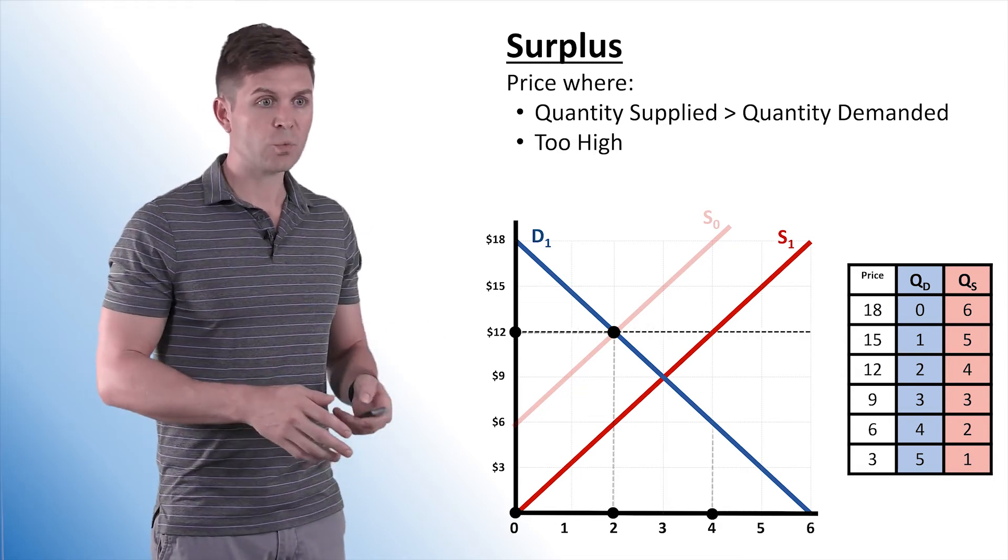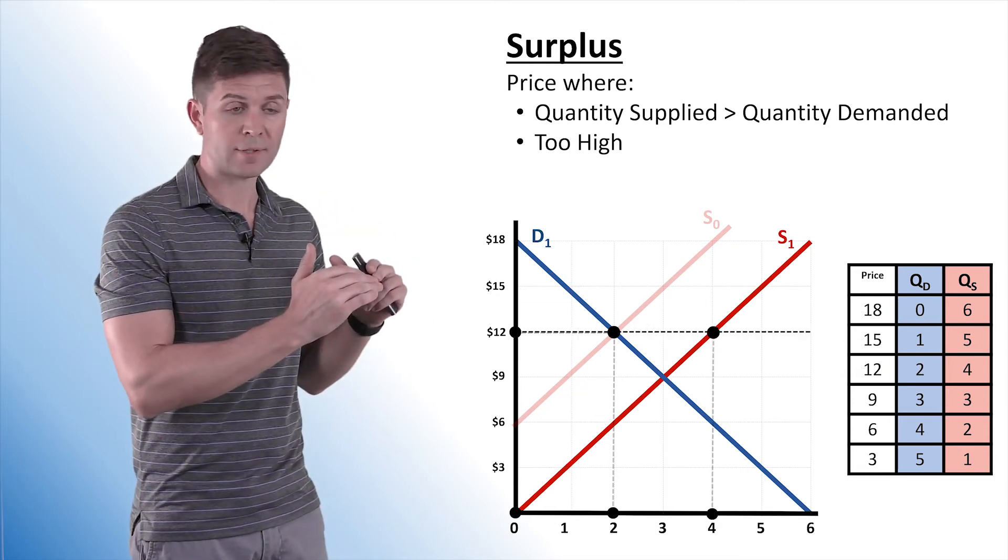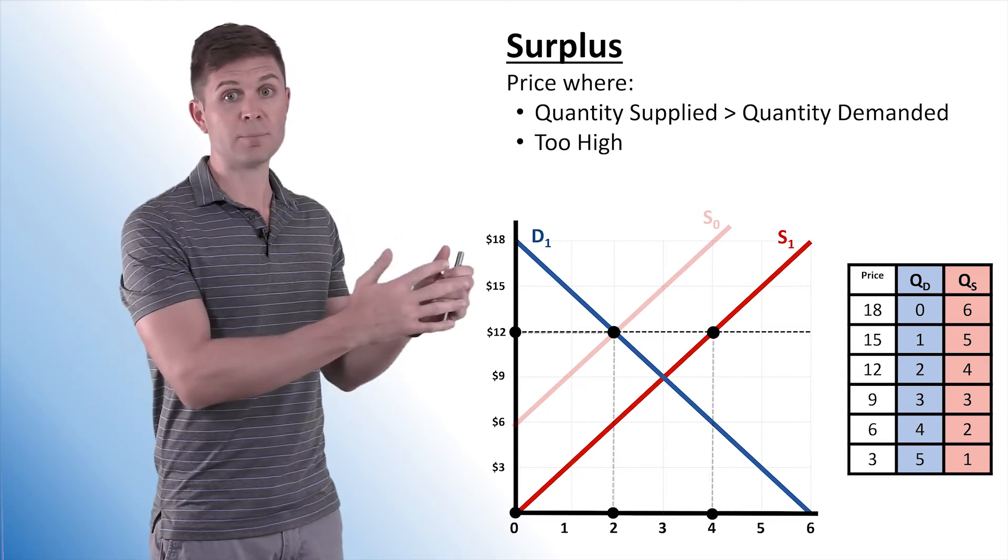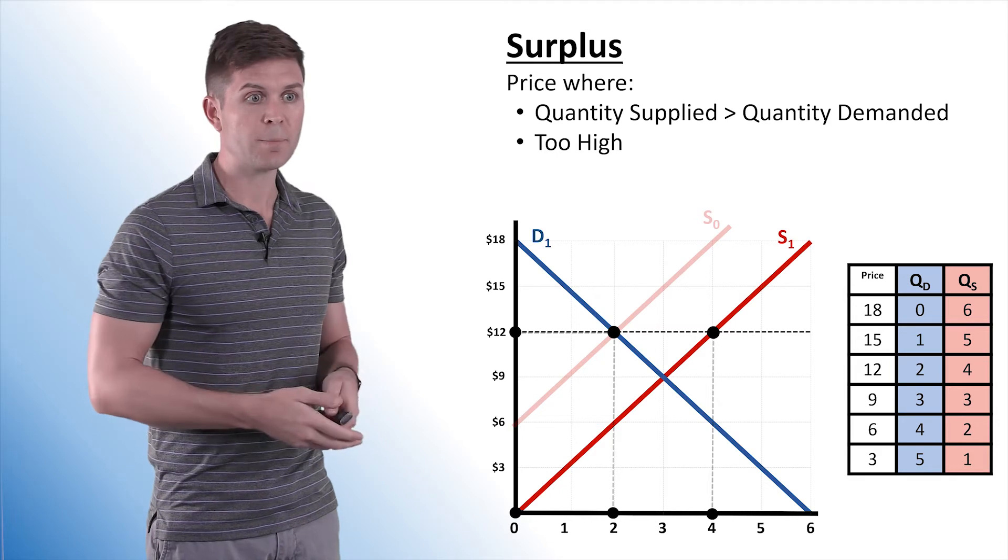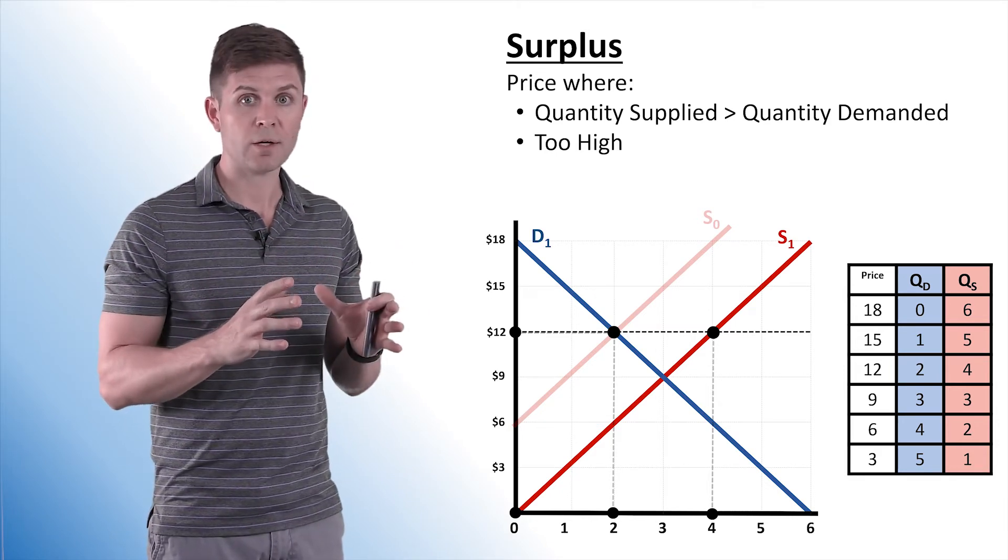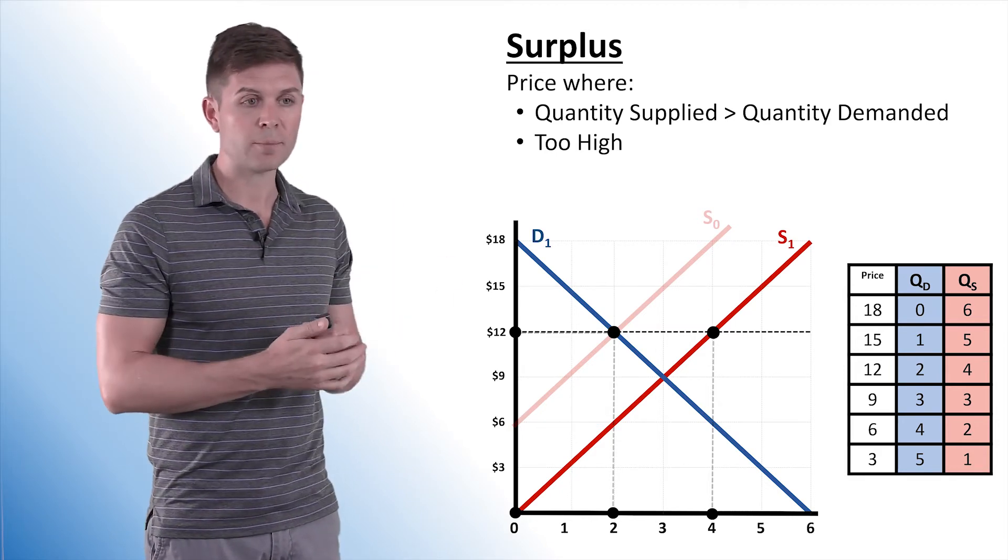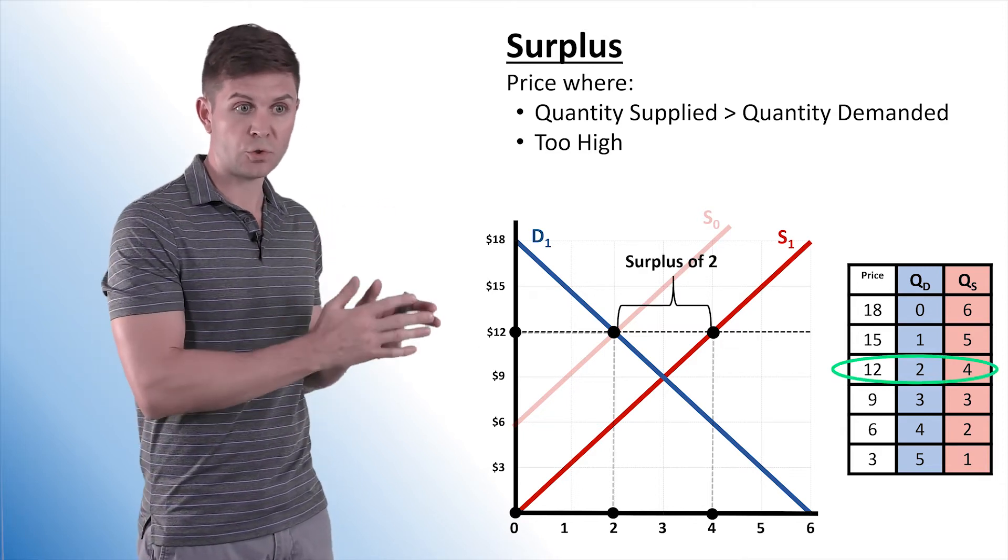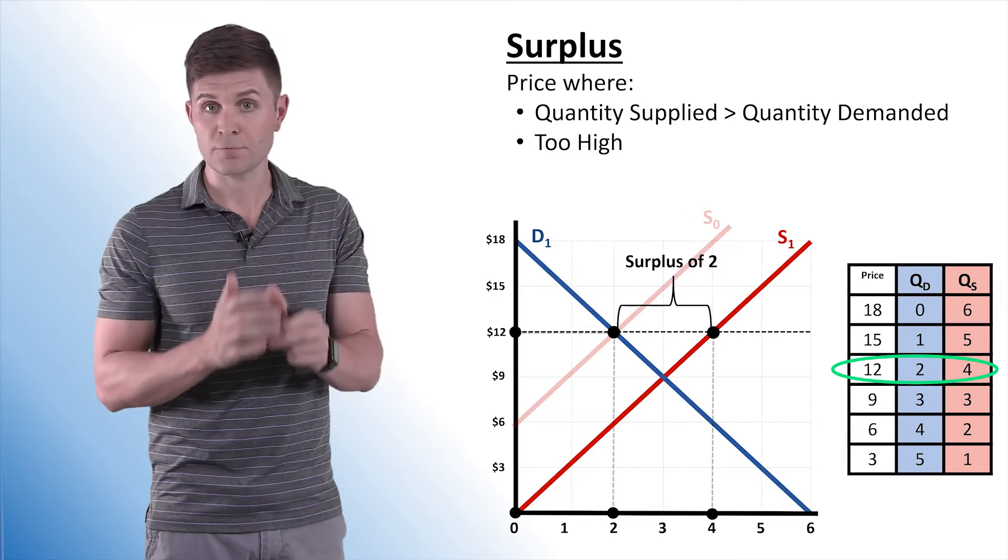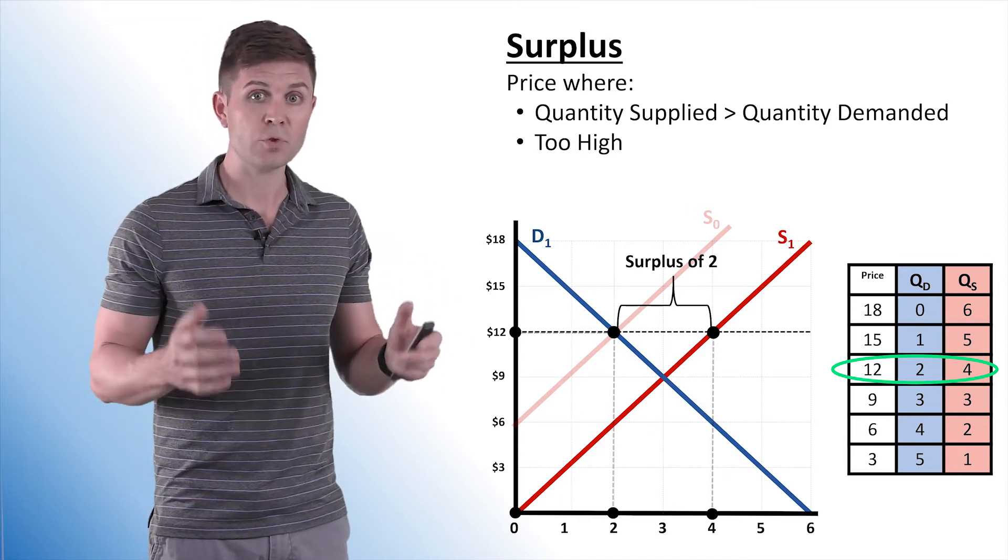So in this situation, we're going to continue at that $12 price level. Suppliers are happy to supply more at $12 and they can because input prices are cheaper. But consumers, they're not changing at all. They're still stuck at that $12 price level. So the quantity demanded in this situation is two, the quantity supplied is four, and we have a surplus of two units.